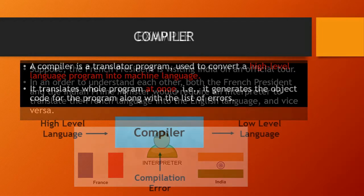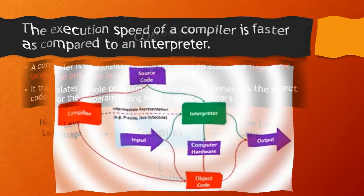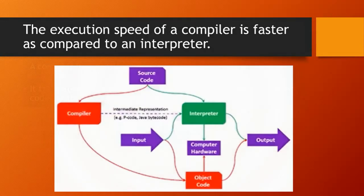Next is the compiler. A compiler is a translator program used to convert a high-level language program into machine language. It translates the whole program at once, generating the object code along with a list of errors. The execution speed of a compiler is faster as compared to an interpreter.